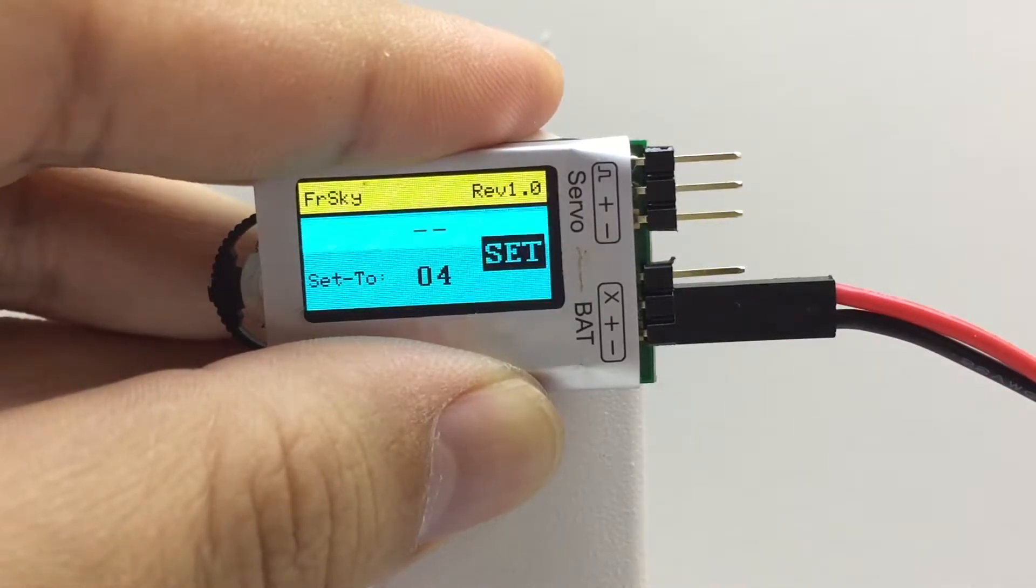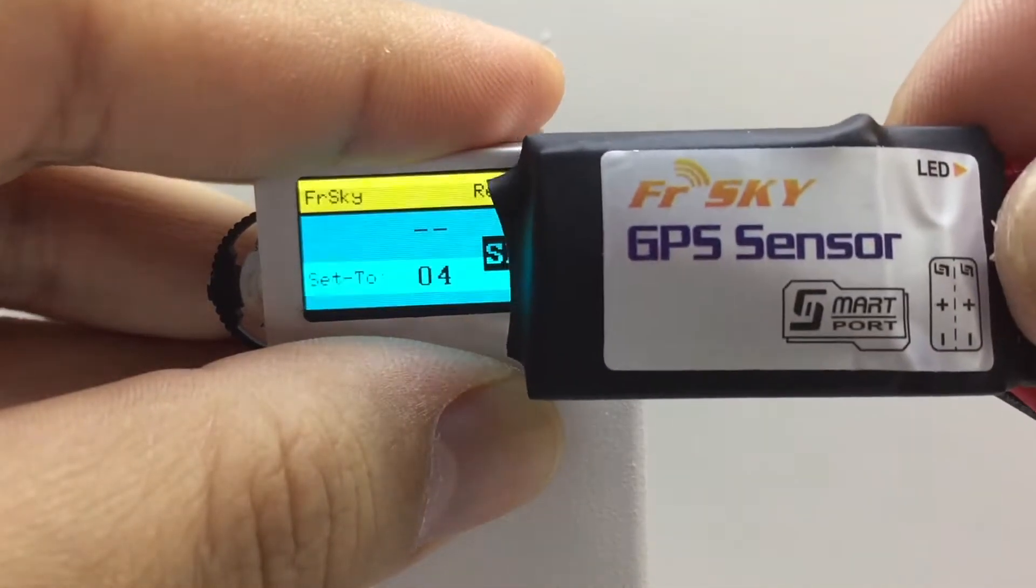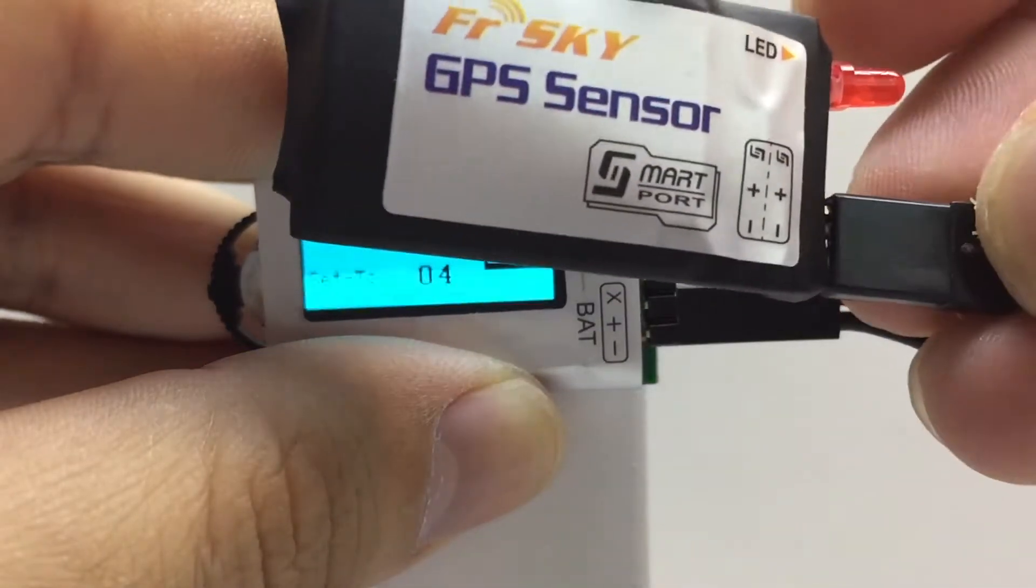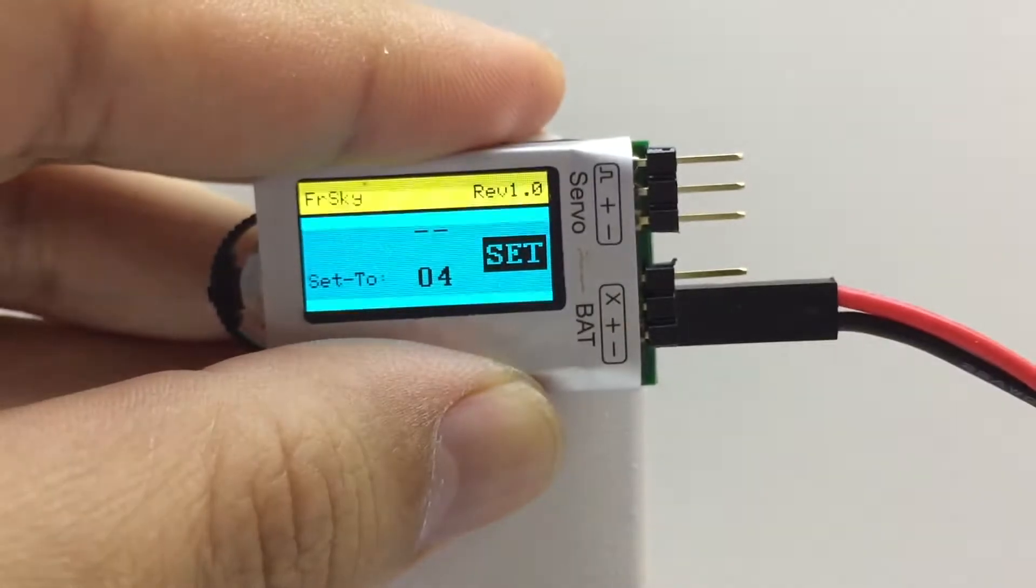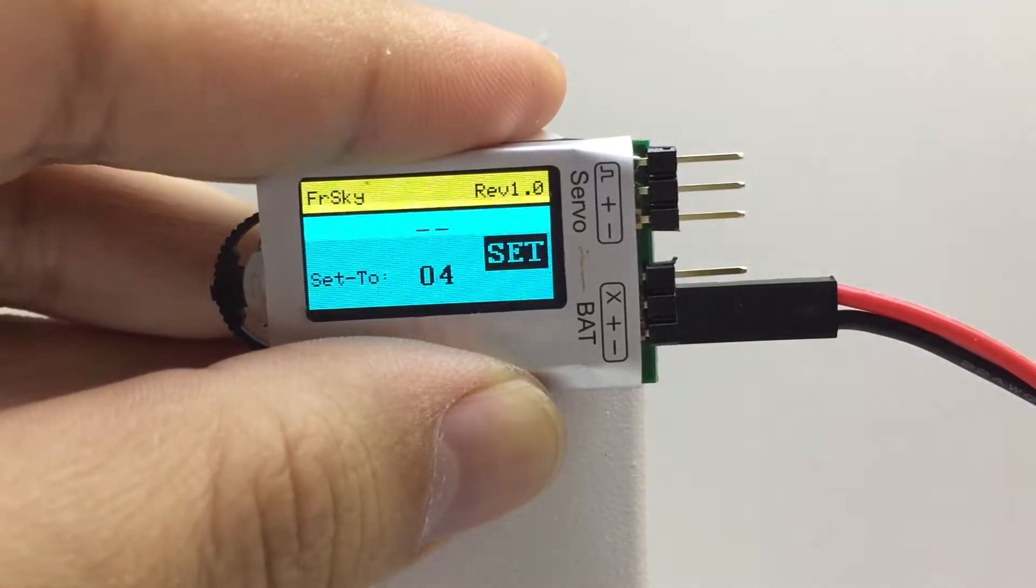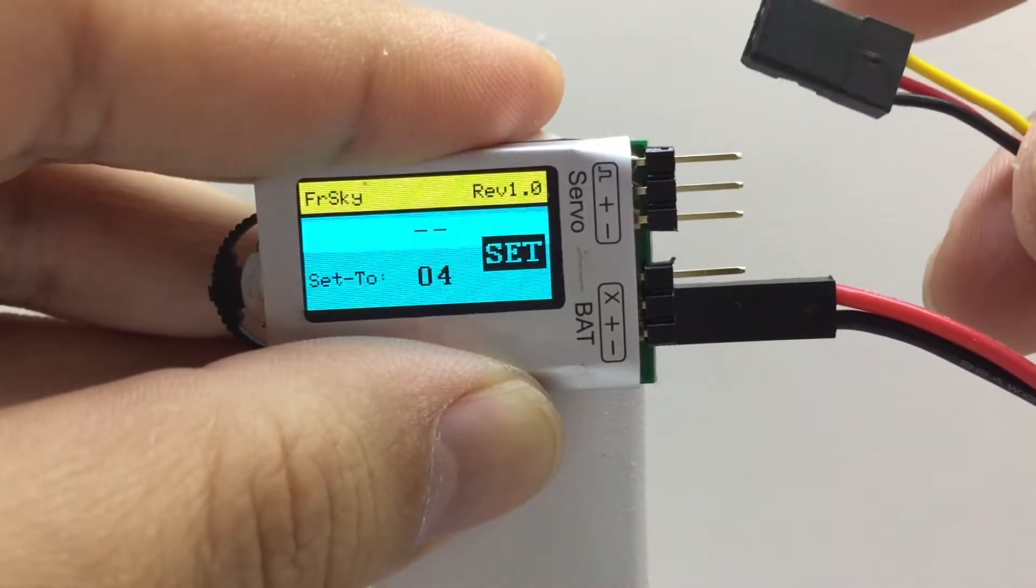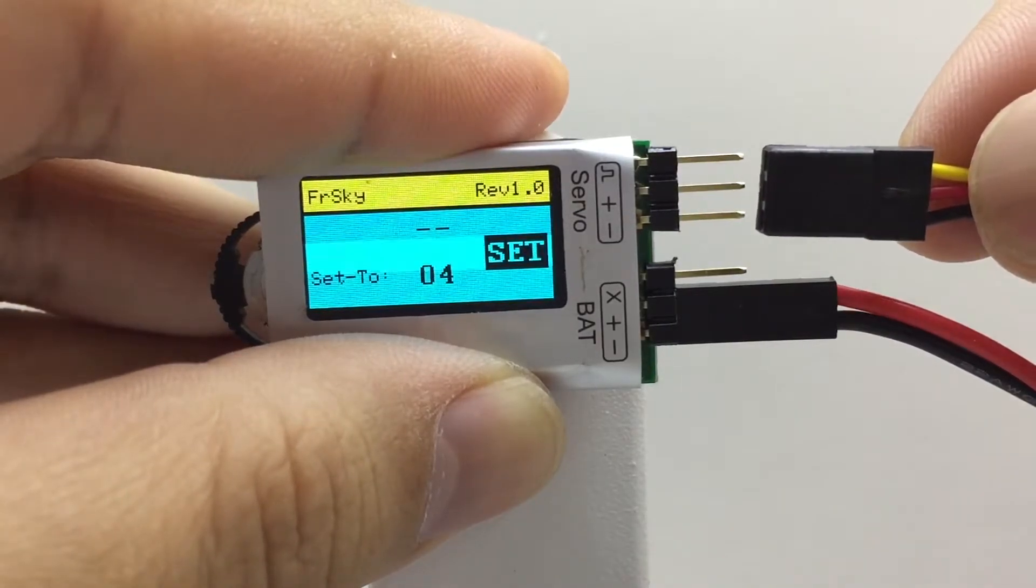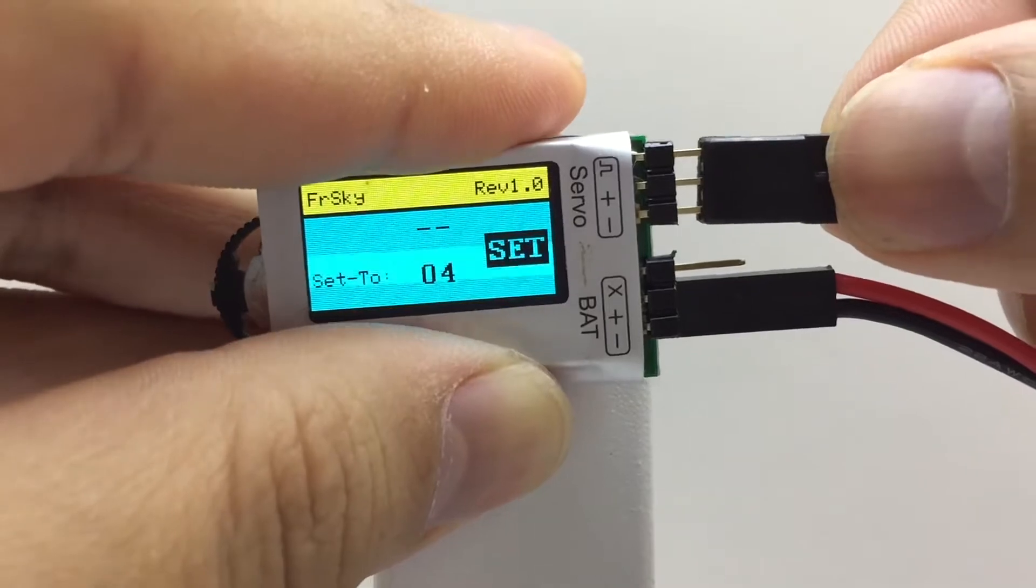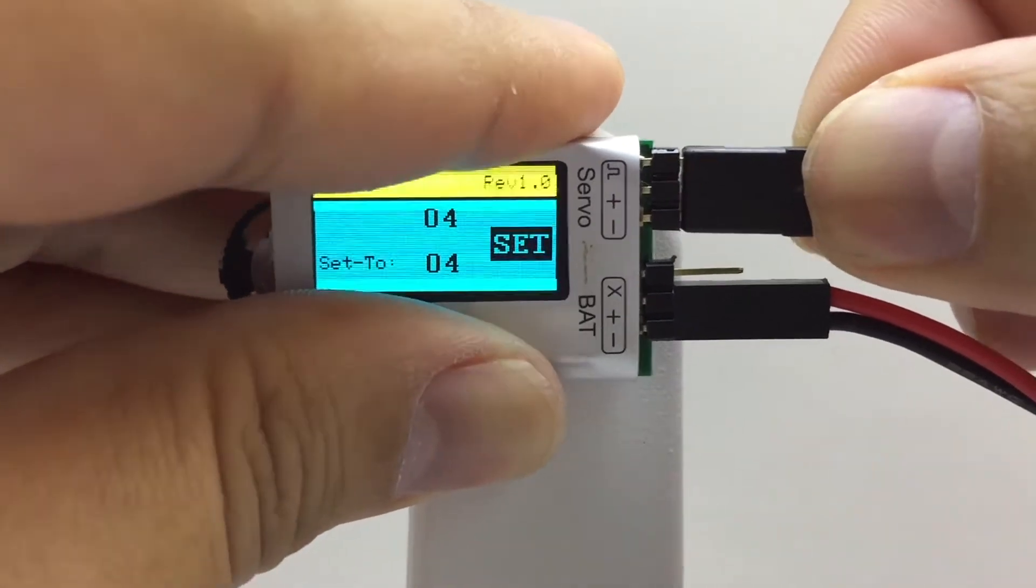Then connect a servo cable to the sensor's S port. Connect the other end of the servo cable to the changer's pins marked servo. The changer now displays the current sensor ID. By coincidence, the GPS sensor used in this example has an ID of 4.